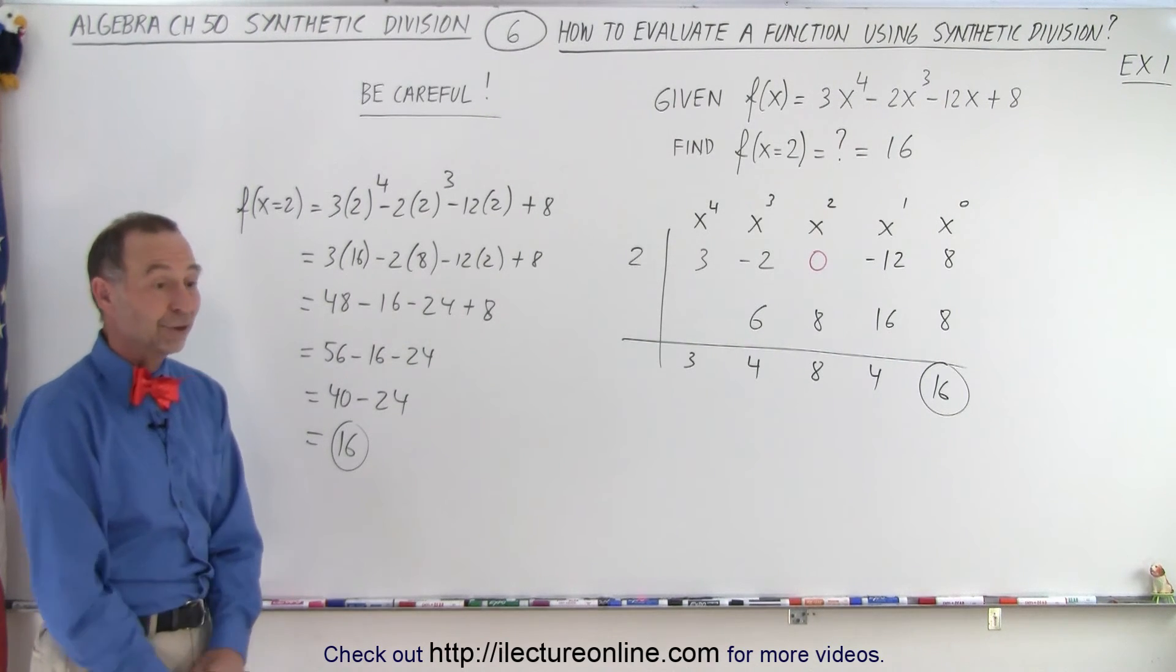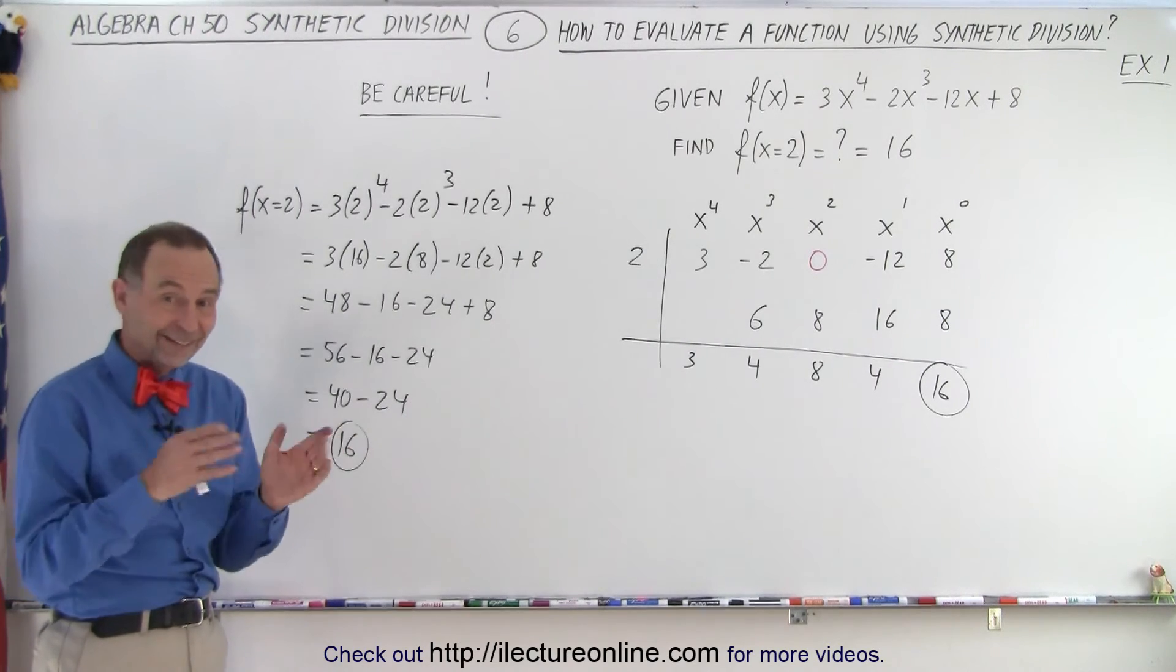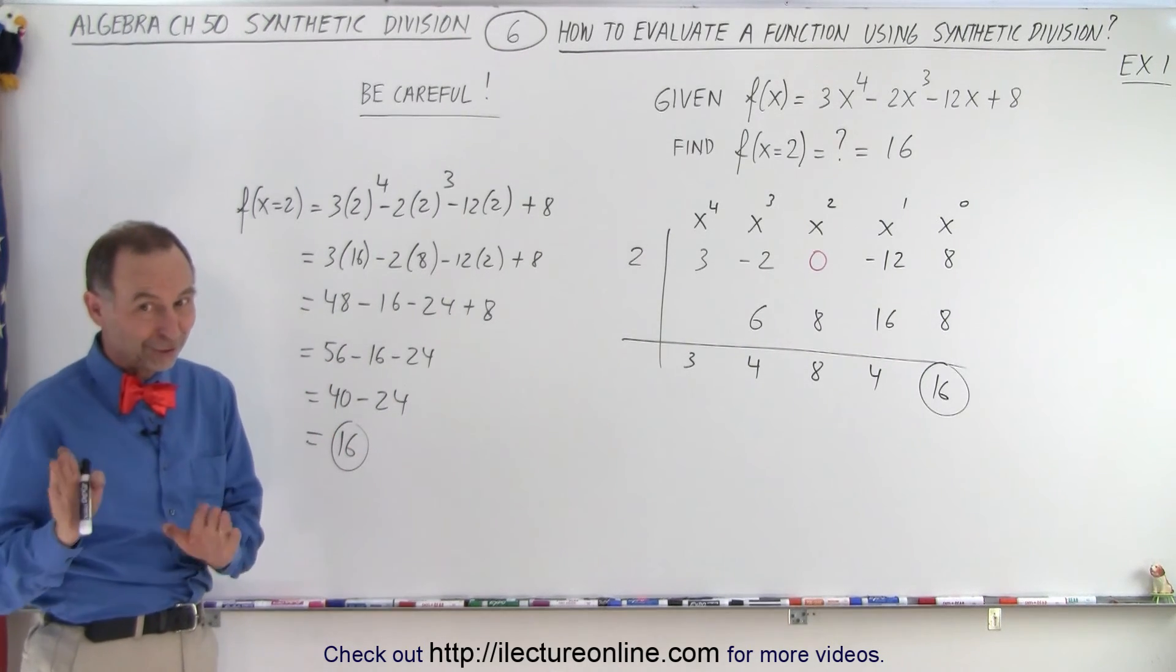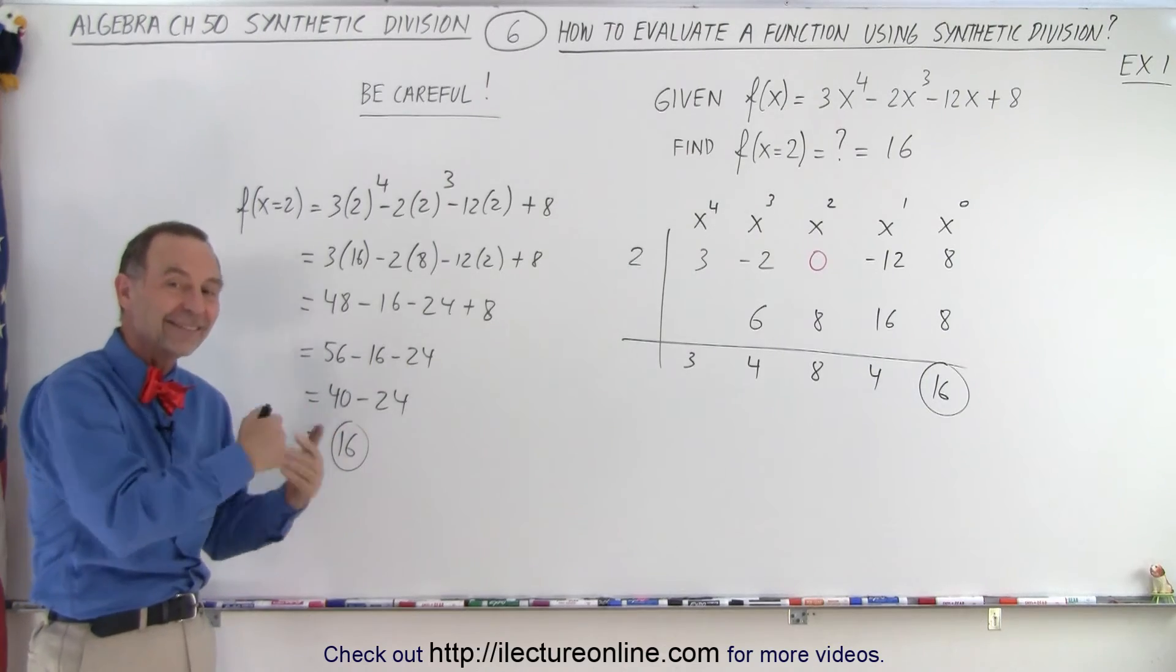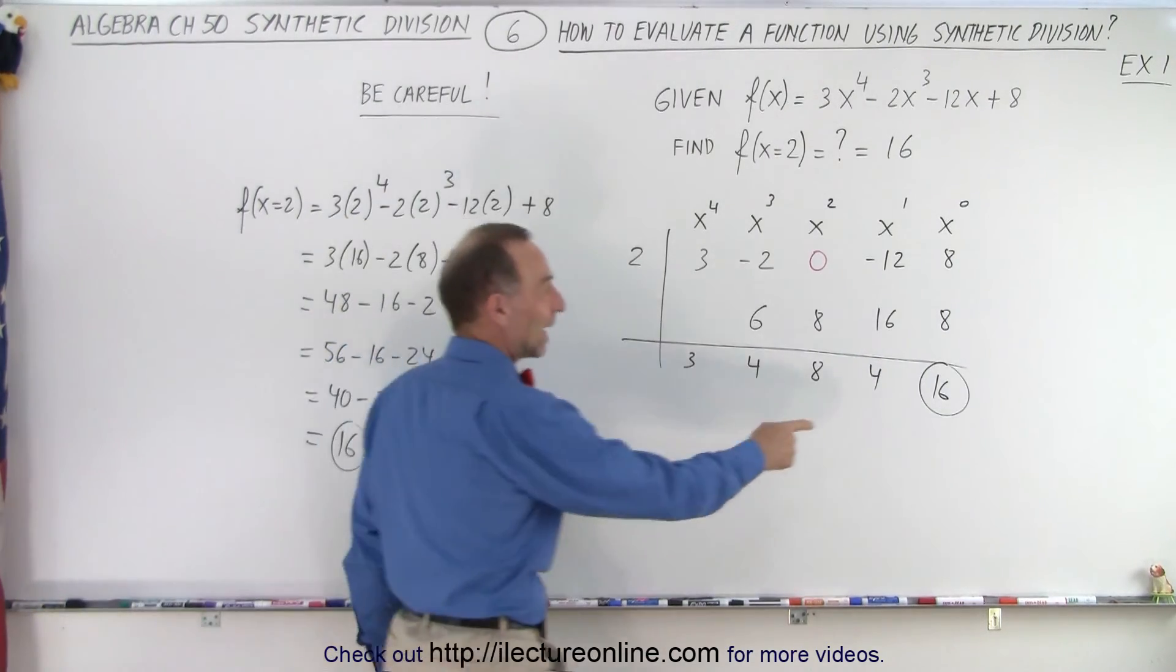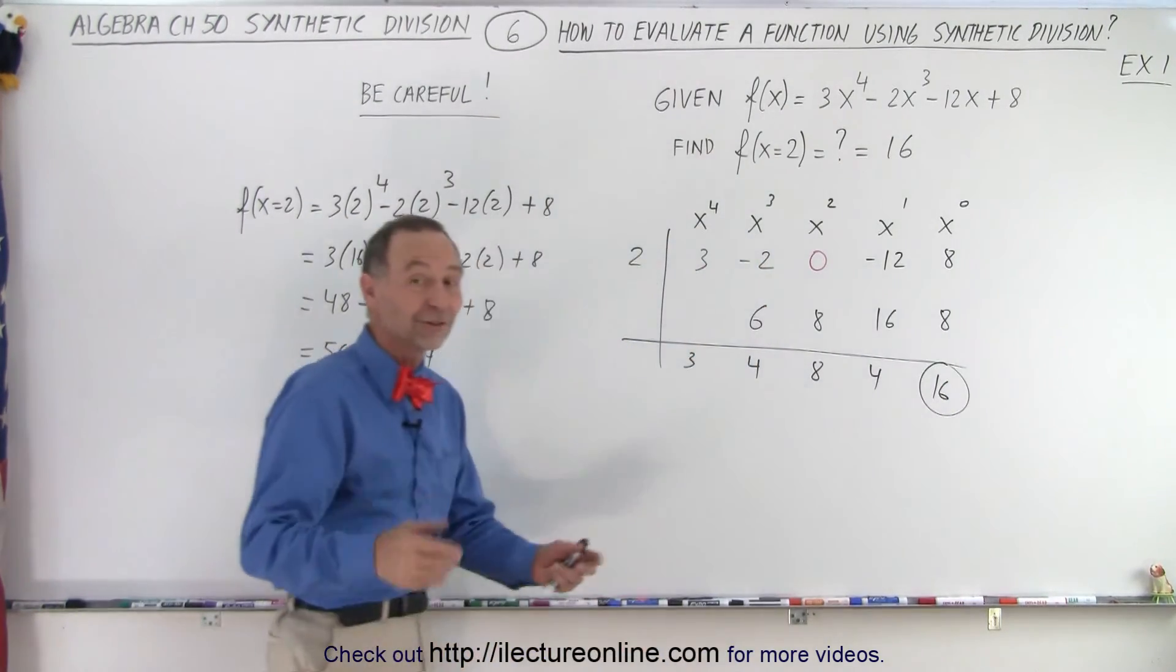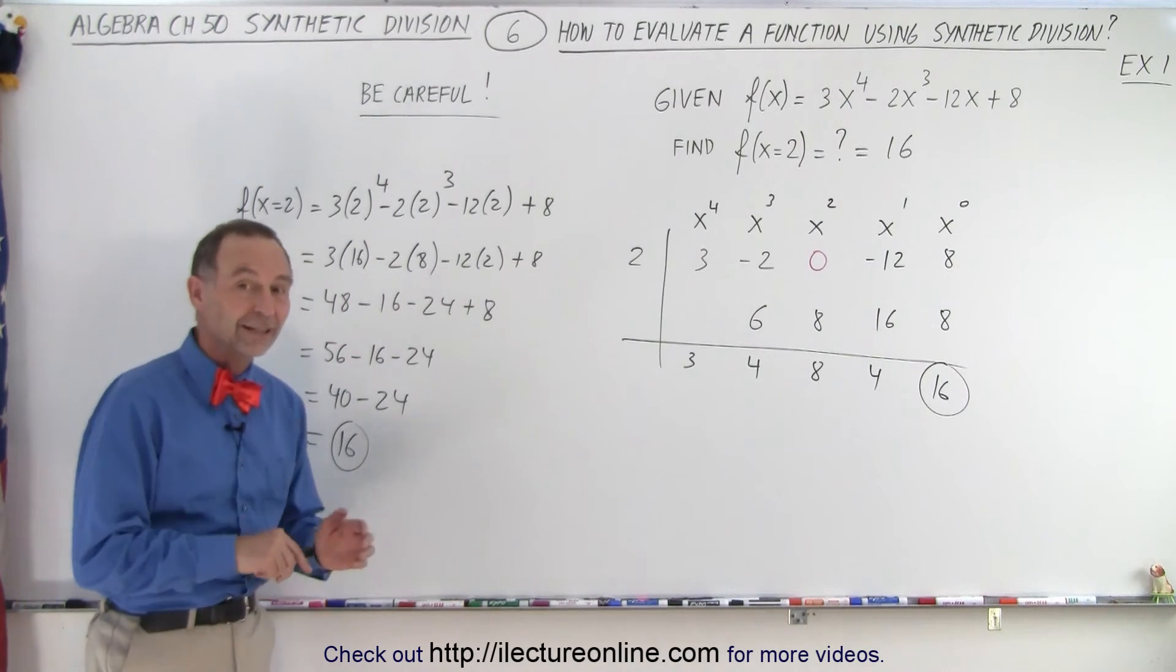If the remainder is 0, then when you evaluate the function, that is actually the root. Remember, we also can find roots with this method. So if the remainder is 0, you actually found the root of the function. And we'll show you how that works.